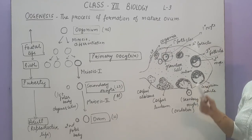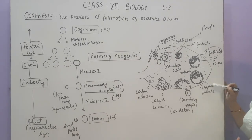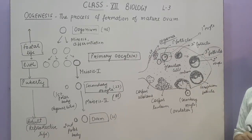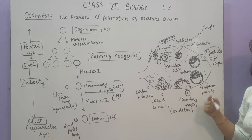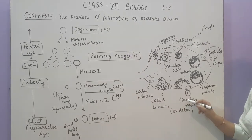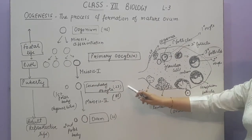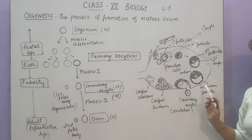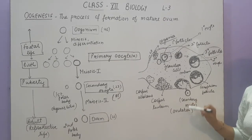This tertiary follicle will be converted into a mature follicle called the Graafian follicle. The difference between the two is that the Graafian follicle has a larger antrum compared to the tertiary follicle. At the time of ovulation — which we will study in detail during the menstrual cycle — the Graafian follicle releases the oocyte into the fallopian tube. We use the term ovum, but actually it is a secondary oocyte, because the secondary oocyte is converted into ovum only at fertilization. The cell released from the ovary into the fallopian tube is actually the secondary oocyte, and this process is called ovulation.